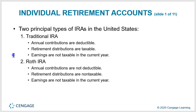There are two principal types of IRAs in the United States: traditional IRA and Roth IRA. With a traditional IRA, annual contributions are deductible, retirement distributions are taxable, and earnings are not taxable in the current year. With a Roth IRA, annual contributions are not deductible, retirement distributions are non-taxable, and earnings are not taxable in the current year.